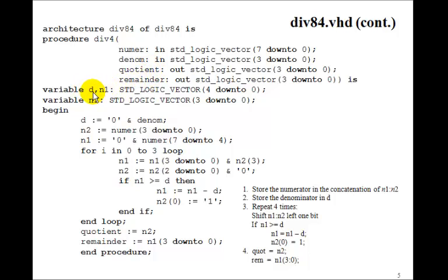So we have a variable d and n1, these are 5-bits and n2 is 4-bits. So here's our little algorithm that we want to implement. So we need to store the numerator in the concatenation of n1 and n2. So the numerator, 3 down to 0, goes into n2, and the numerator 7 down to 4, with a leading 0, goes into n1. The denominator with a leading 0 goes into d.